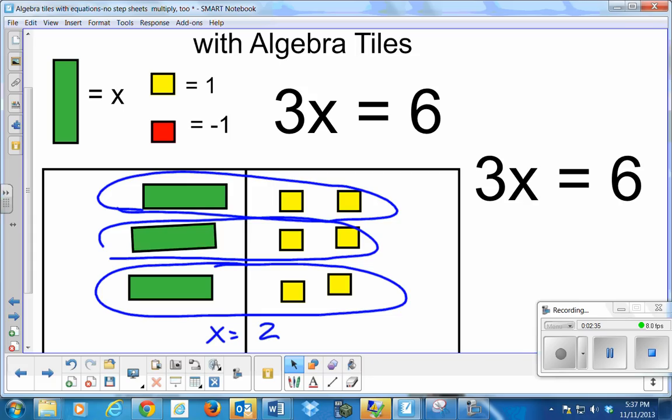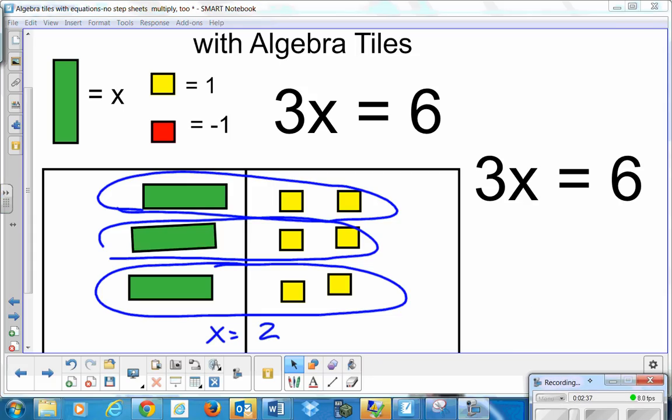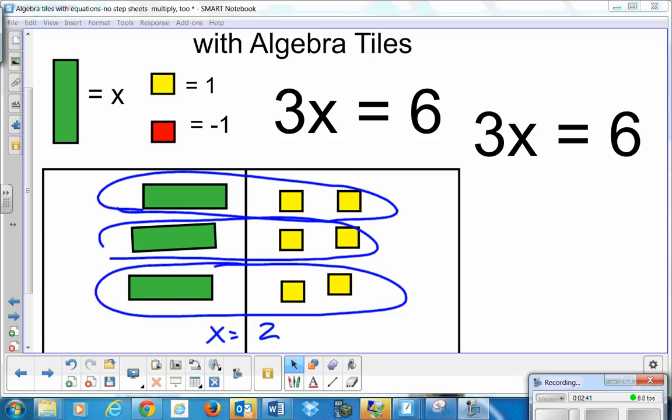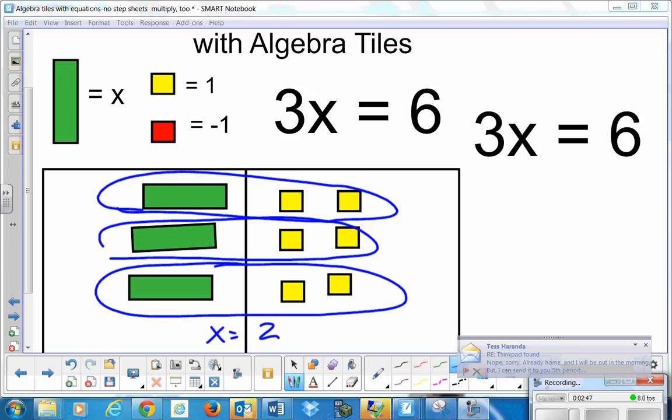So to show you algebraically, 3x is equal to 6. I'm multiplying x times 3. I really don't care what 3x is. I want to know what x is. I want to isolate x, so I have x is equal to something. So I want to get x by itself. Right now, x is being multiplied by 3. So I'm going to divide that by 3 in order to undo that multiplication.